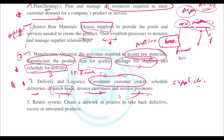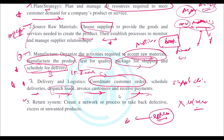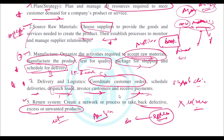The final component is the Return System. If a customer is not satisfied with a delivered product and wants to return it, you need a good network or process to take back defective items. Amazon and Flipkart are good examples — they have a return policy in place for when a product is defective or the customer is unhappy, and they have a well-functioning return system.